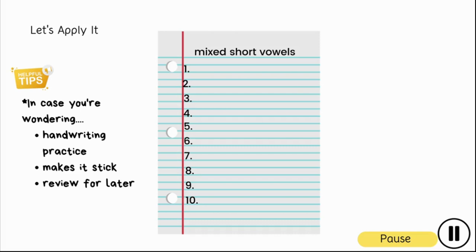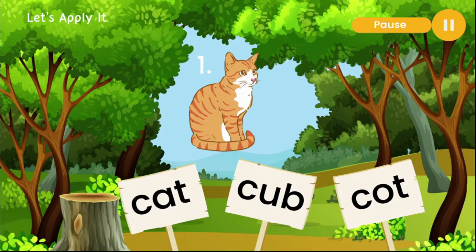Now let's apply what we know. Take out your paper and pencil and number your papers 1 through 10. In case you're wondering why I asked you to write your answers, it's for three simple reasons: it gives you handwriting practice, it helps to make that information stick so it's easier to remember, and you can always go back and review your answers for later. The activity includes saying the name of each picture, and under the picture you have three different words.